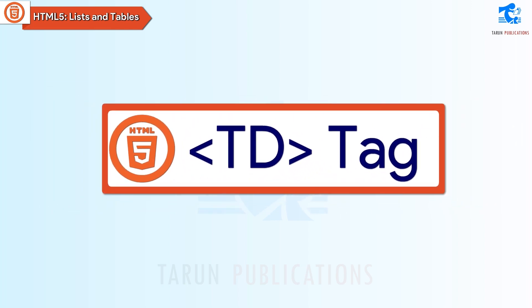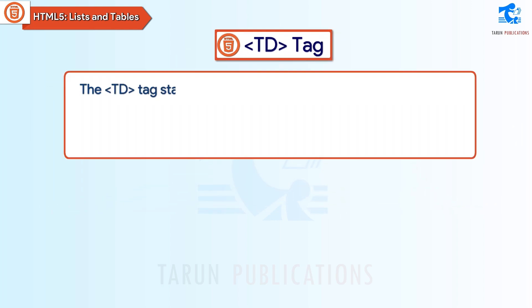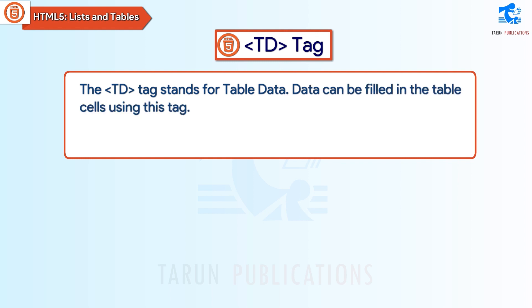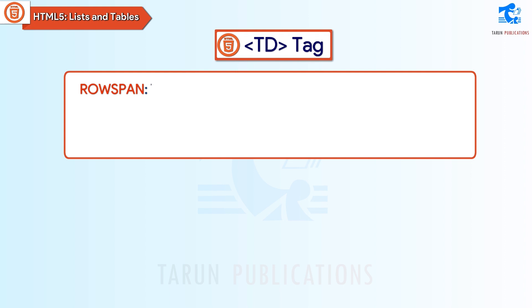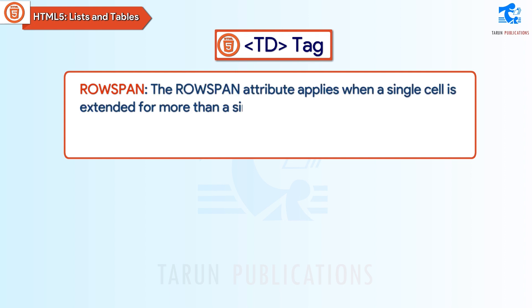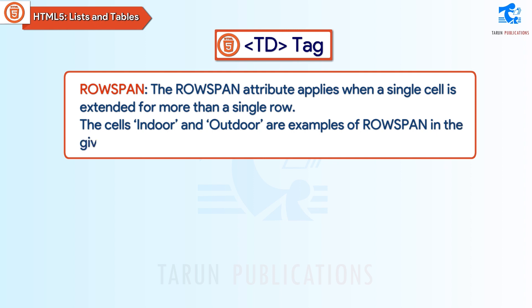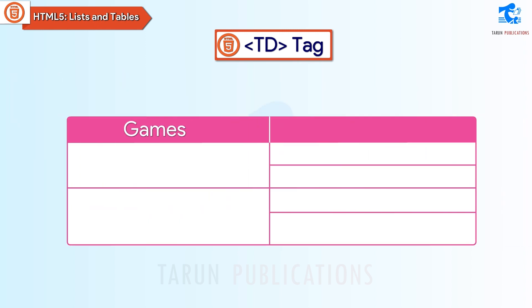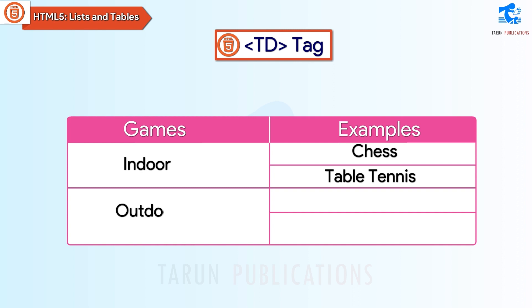The td tag stands for table data. Data can be filled in table cells using this tag. The td tag has the following attributes: Row Span — the rowspan attribute applies when a single cell is extended for more than a single row. The cells 'Indoor' and 'Outdoor' are examples of rowspan in the given table. For example: Games and Examples — Indoor: Chess and Table Tennis; Outdoor: Volleyball and Basketball.